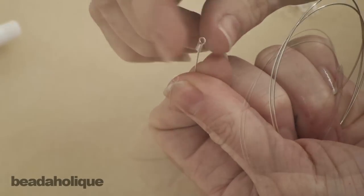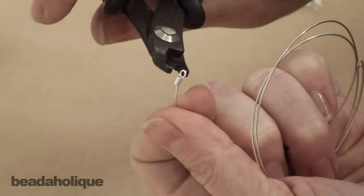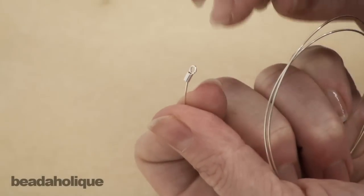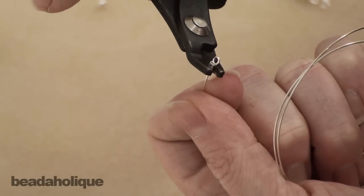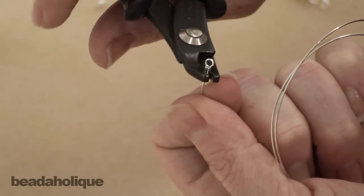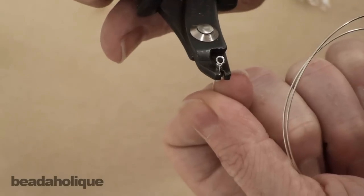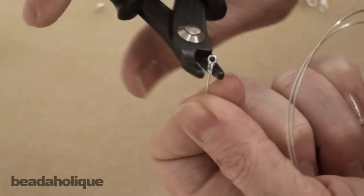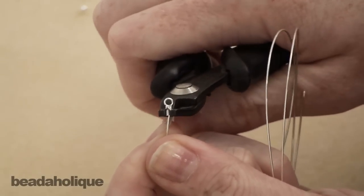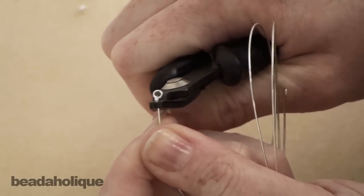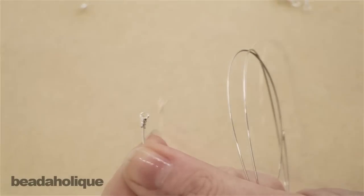Take your crimping pliers. Now we're not going to want to crimp up near the loop because you run the risk of actually hurting the loop itself. So what you're going to want to do is just crimp down at the bottom. You're just going to crimp like any other crimp bead. There you go, and that's going to stay on there securely.